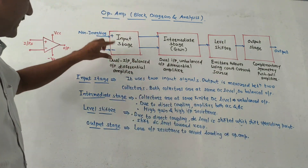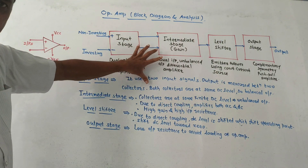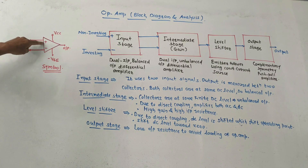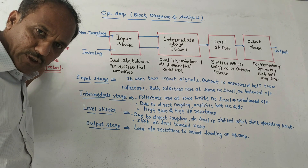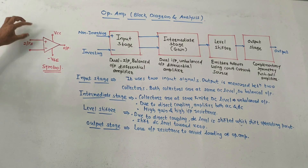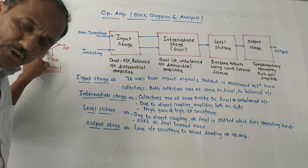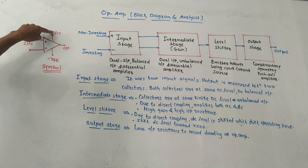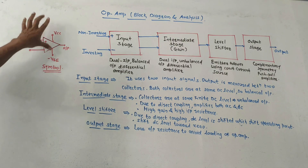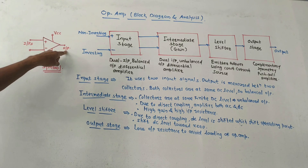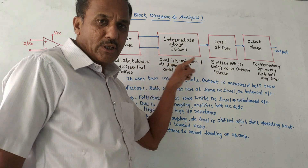The first part is the block diagram of operational amplifier. This is the symbol of op-amp, which has two input terminals: a positive input terminal and a negative input terminal. The positive input terminal is called the non-inverting input terminal; the negative input terminal is the inverting input terminal. Plus VCC and minus VEE supplies are connected to this op-amp, and from one end we take the output.